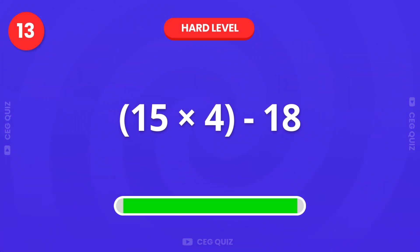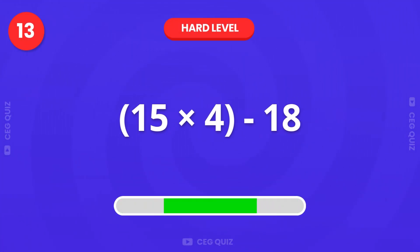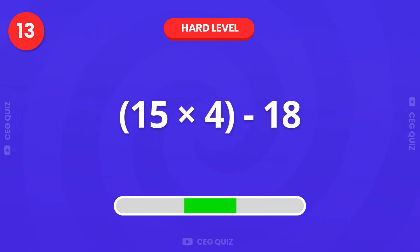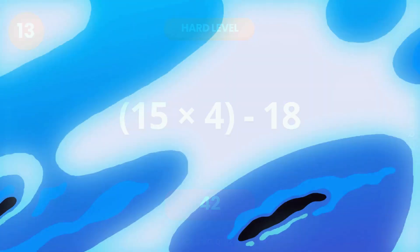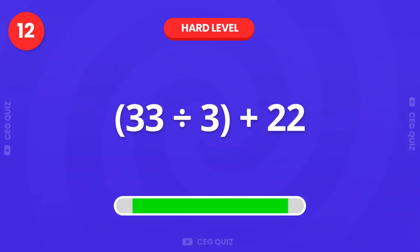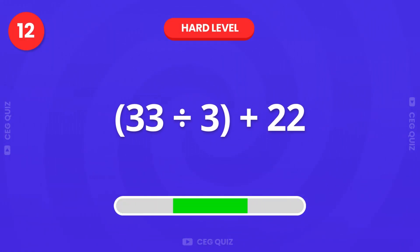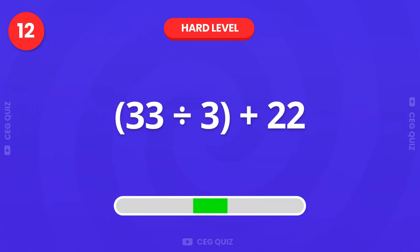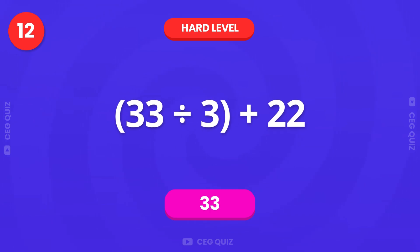Now, what is 15 times 4 minus 18? Very good, it's 42. How much is 33 divided by 3 plus 22? That's 33.